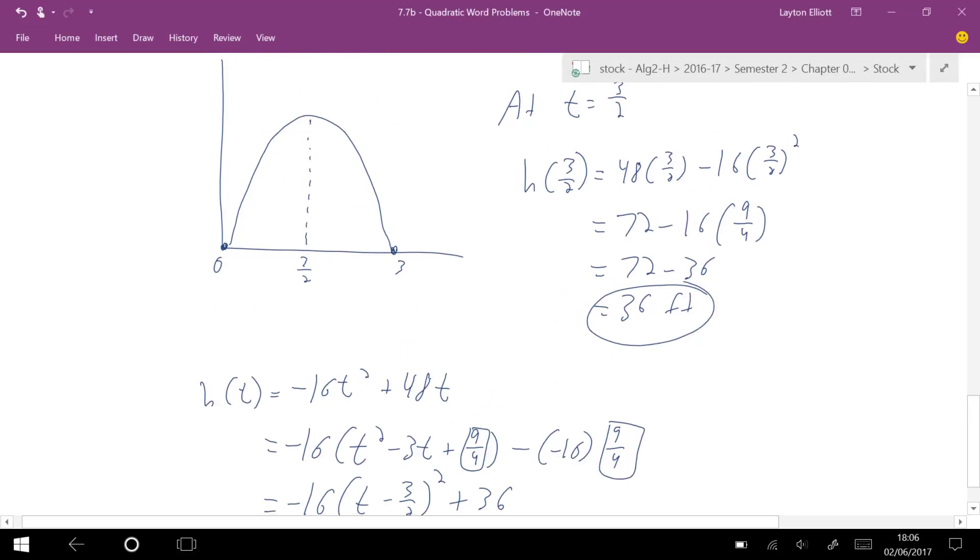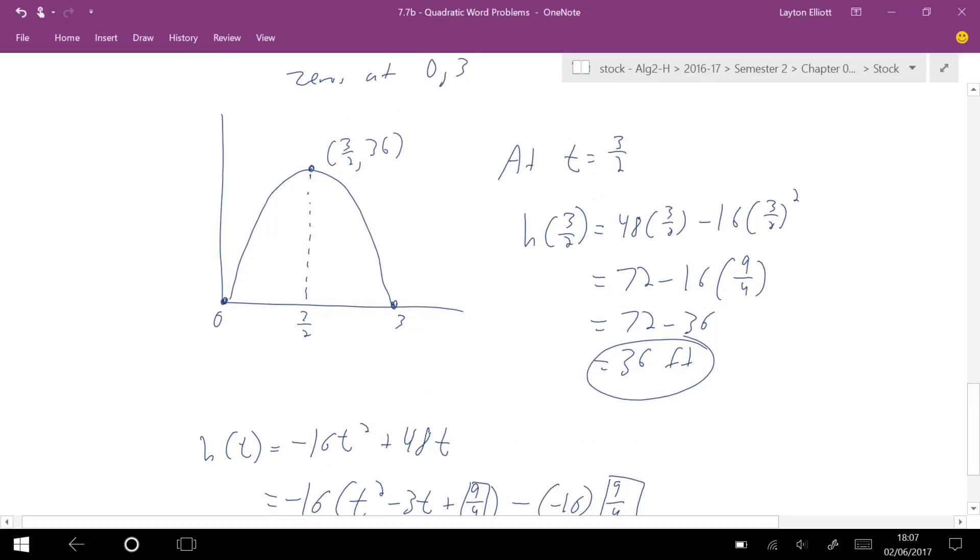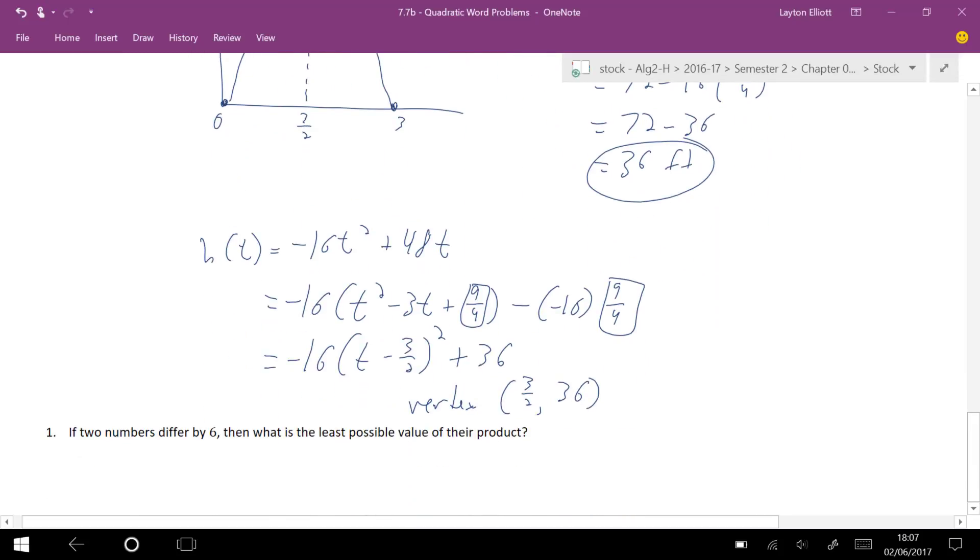And then I factor. Negative 16 times (t minus 3 halves) squared, this would be plus 16 times 9 fourths, which is plus 36, and my vertex is at (3 halves, 36), which is the same thing we just got right up above. That at time equals 3 halves, this ordered pair, 3 halves 36, my vertical is 36 feet.